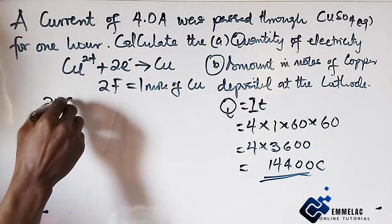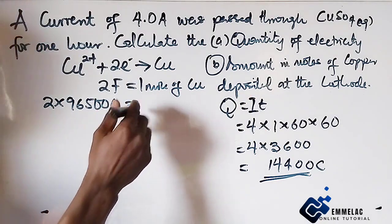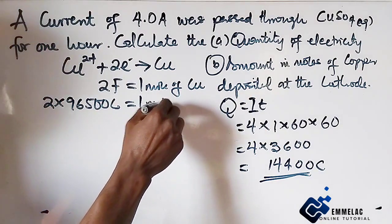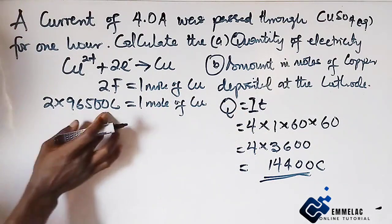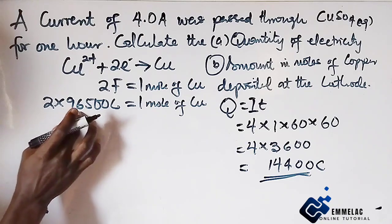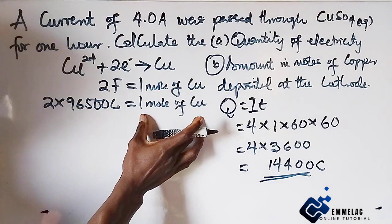And which means 2 times 96,500 coulombs actually discharge 1 mole of copper. Now, if 2 times 96,500 coulombs gave 1 mole of copper.